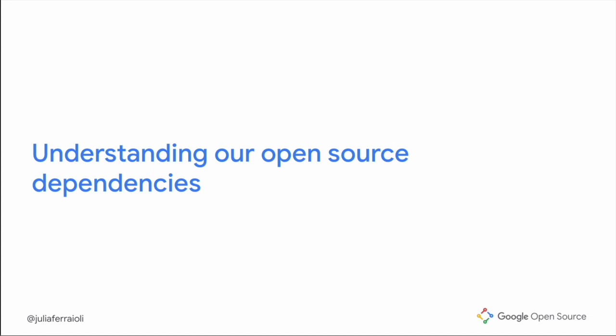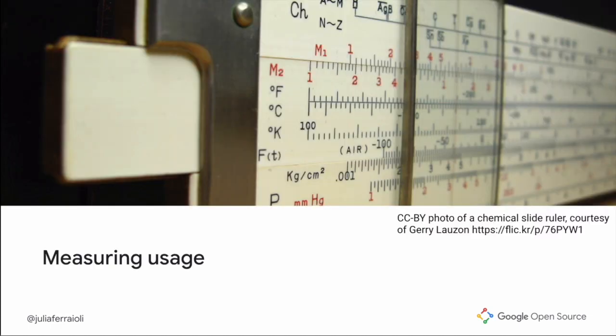We can do more by digging a little deeper. The first thought I had when tackling the problem of evaluating our open source dependencies was: I'll just compile a list of the projects most used by Google code. I'm grimacing remembering this, because I was so naive — this is far easier said than done. Luckily, a colleague had started down this path already, and I was able to build on his work.